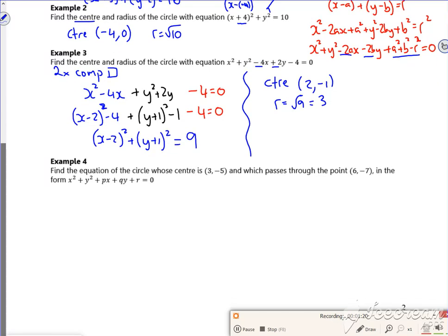So I'll look at example 4 then. Find the equation of a circle whose centre is 3 minus 5, and it passes through the point 6 comma minus 7. So I've got a circle, dodgy looking circle, it's got a centre 3 minus 5, and the point is 6 minus 7.